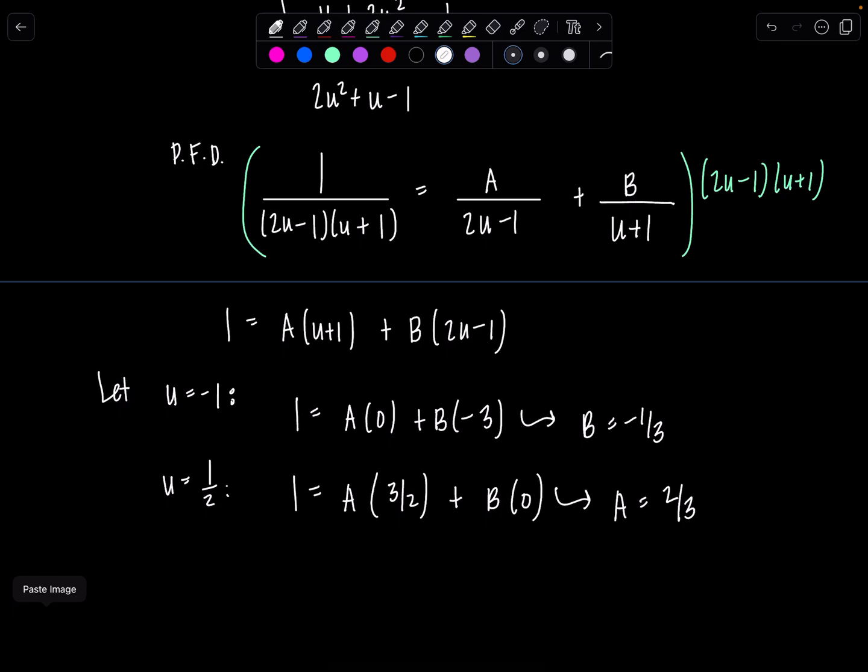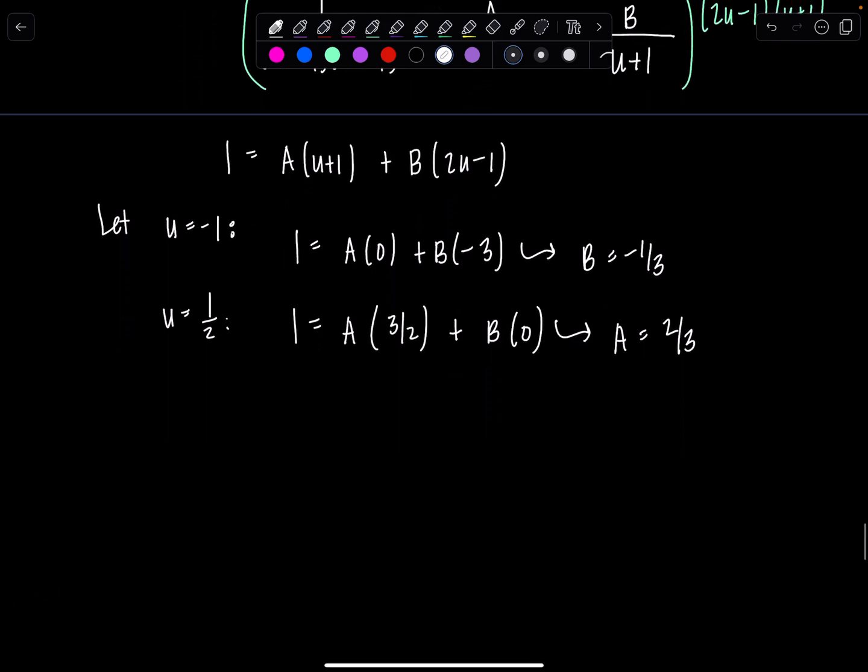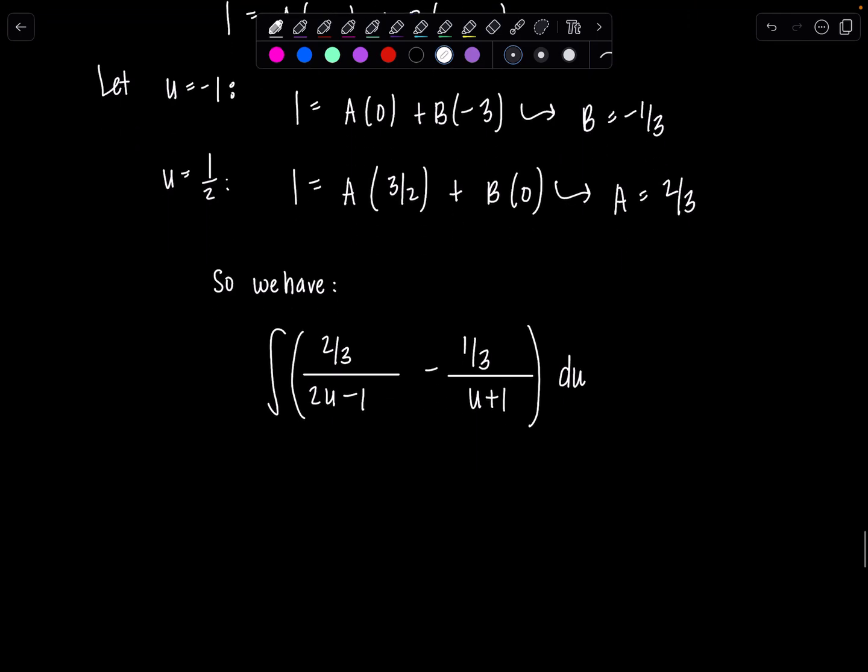Fabulous. Okay, so then I can rewrite my integrand. So we have now the lovely 2 thirds over 2u minus 1. I'll put minus instead and then the 1 third in the numerator. And the other term was u plus 1 in the denominator. Put some parentheses and a du. All right, good. I'm not going to do any more substitutions. I'm ready to integrate.